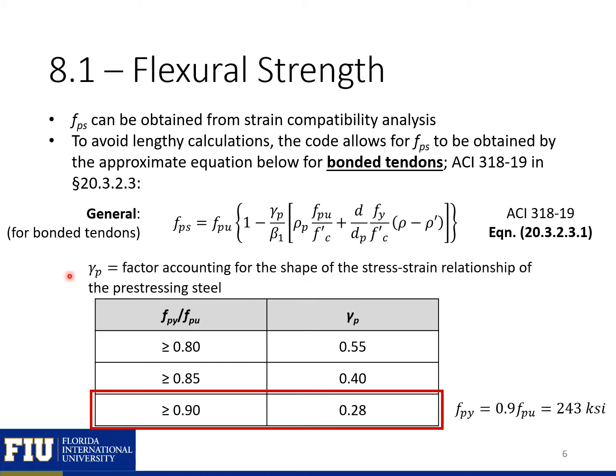The first variable is the gamma_p factor, which accounts for the shape of the stress-strain relationship of our pre-stressing steel. The gamma_p factor varies based on the ratio of our yield strength to the ultimate strength. Typically we assume a yield strength of 243, or 0.9 F_pu, so our gamma_p factor is going to be 0.28.